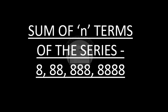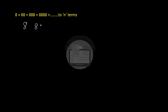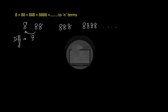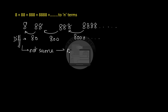Let us try to find out what kind of series this is first. Let us find the difference between consecutive terms: 88 minus 8 gives 80, 888 minus 88 gives 800, and here we get 8000 and so on. Since the common difference is not the same between consecutive terms, it is not an arithmetic sequence.